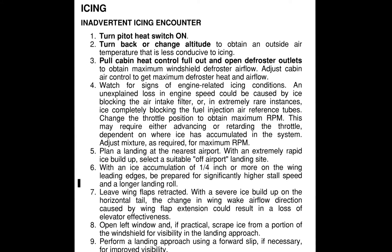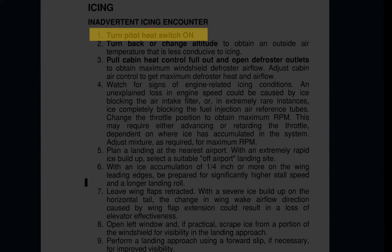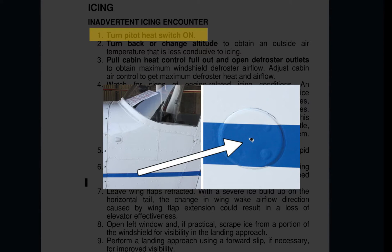In the event your aircraft has an inadvertent icing encounter, there are several steps to take if you refer to your aircraft's operating handbook. In this example we will refer to a Cessna 172 SP POH. The first step is to turn on pitot heat to eliminate any potential ice buildup on the pitot tube that could affect your pitot static system. And if you suspect icing buildup on the static port due to erroneous instrument readings, using your alternate static source will be the only alternative.